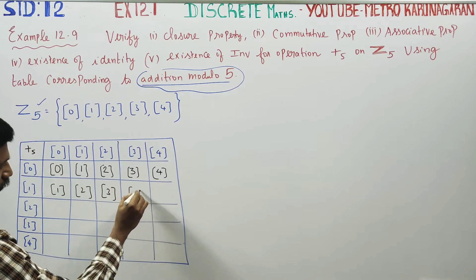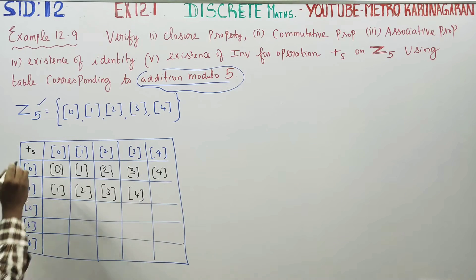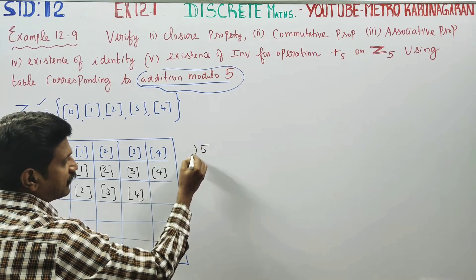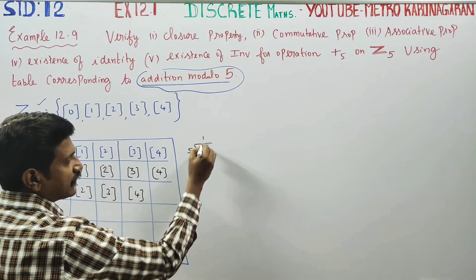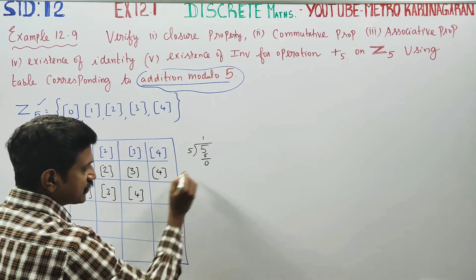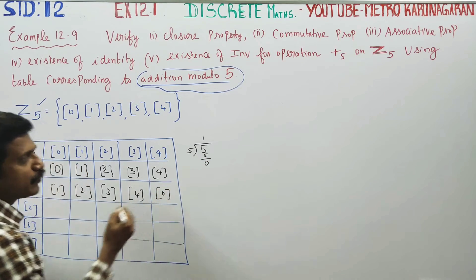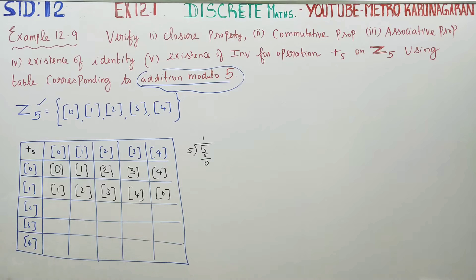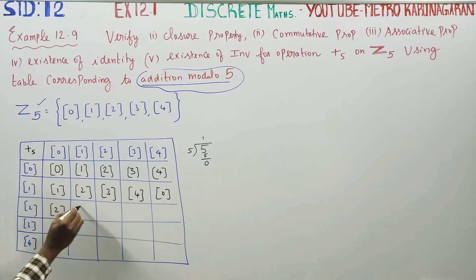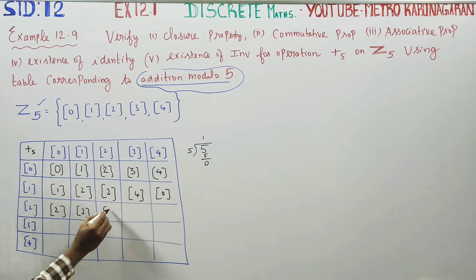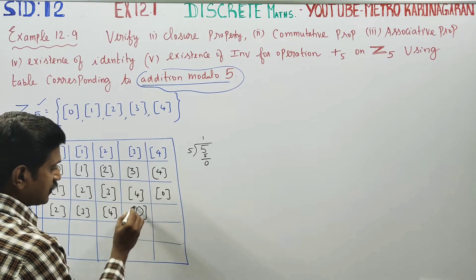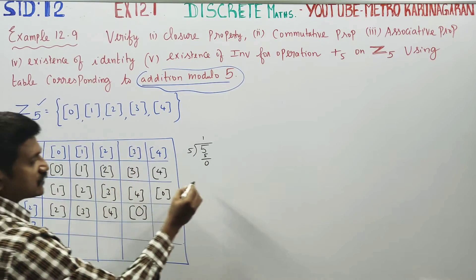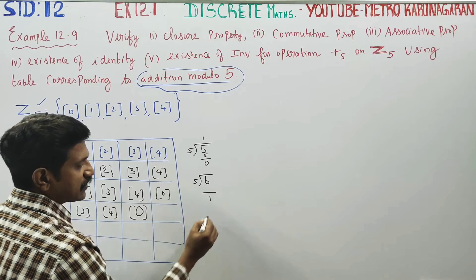For example: 1 plus 4 is 5; 5 divided by 5 gives remainder 0. Then: 2 plus 0 is 2; 2 plus 1 is 3; 2 plus 2 is 4; 2 plus 3 is 5, remainder 0; 2 plus 4 is 6, and 6 mod 5 gives remainder 1.